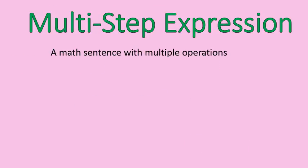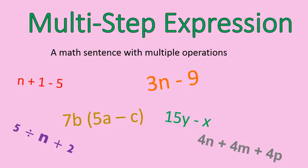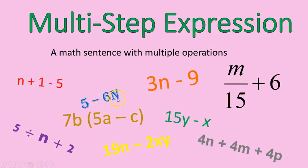A multi-step expression is basically a math sentence with multiple operations. I'll show you a couple examples here on the board of these different multi-step expressions. For example, in this blue one right here, you'll be doing 5 minus 6 times n. So you're doing subtraction and multiplication. That's a two-step expression because it takes two steps to solve it. This one here has many steps, 7 times b, and then you're multiplying that times the quantity of 5 times a minus c. So there's a lot of different steps inside of here. That's what basically multi-step expressions are.